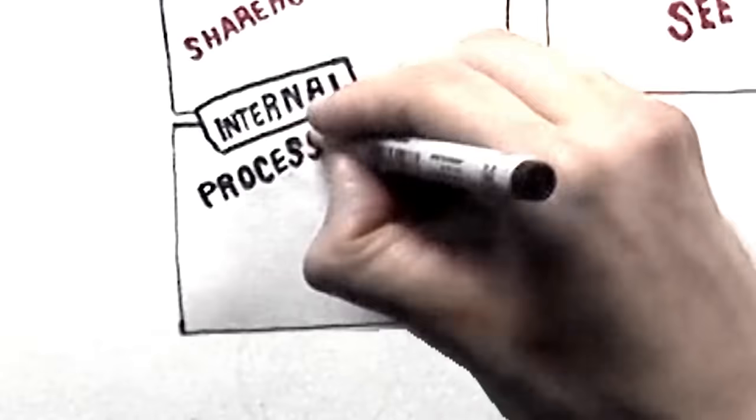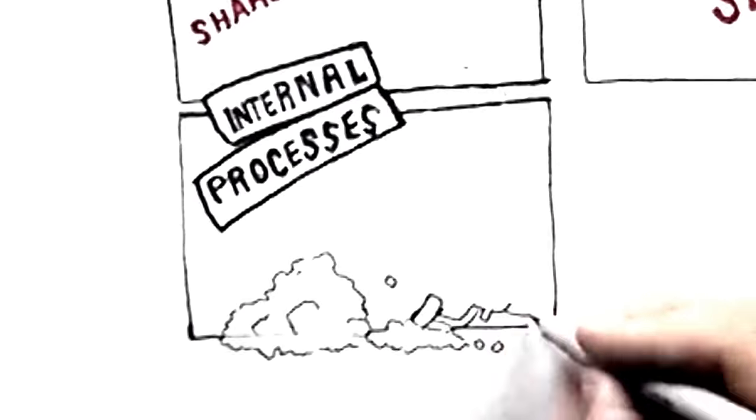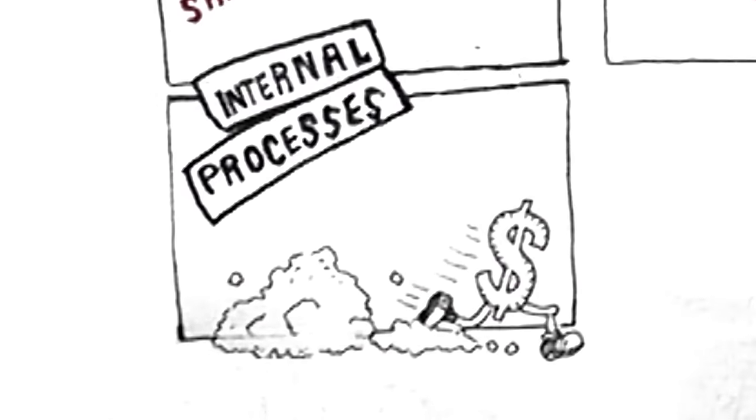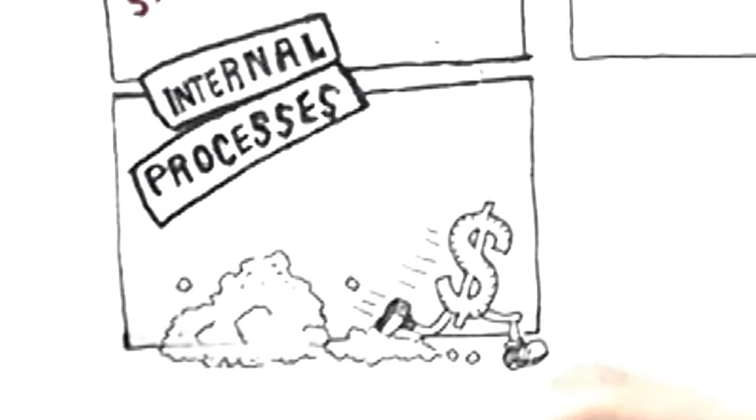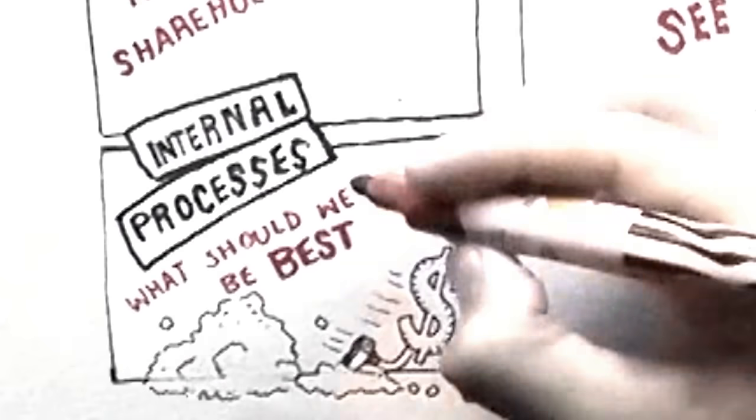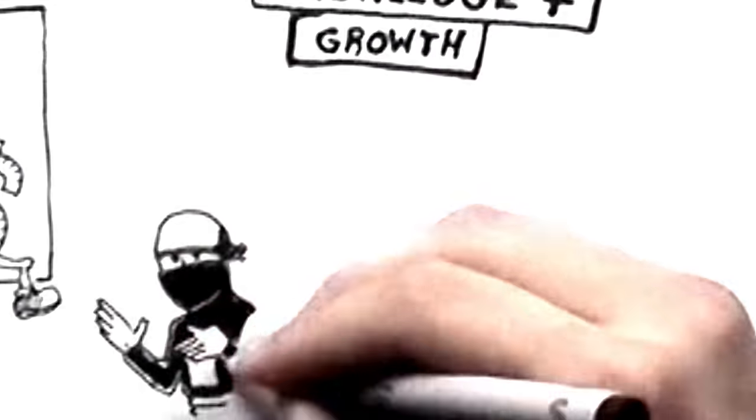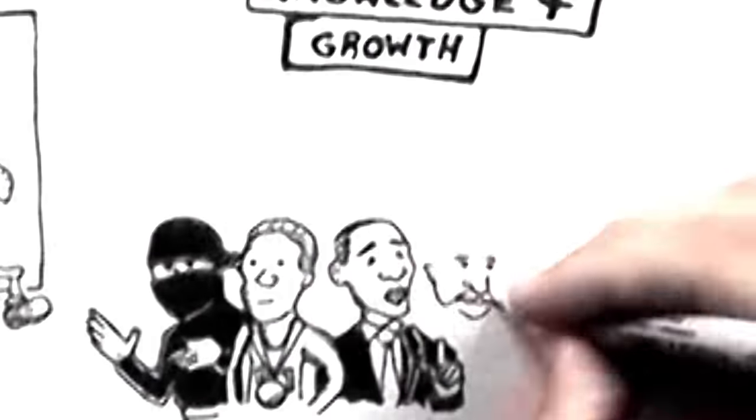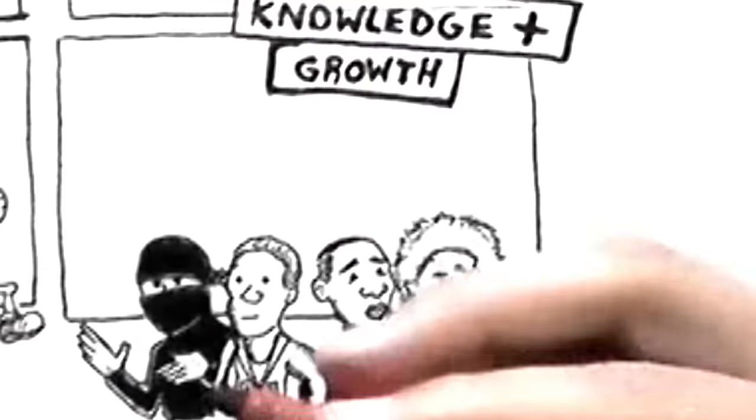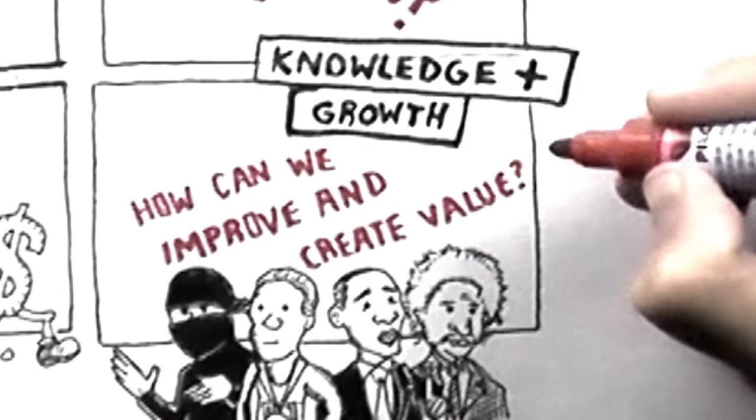The Internal Processes perspective determines how well the business is running and whether we provide what our customers actually want. In other words, what should we be best at? The Learning and Growth perspective looks at people, their skills, training, leadership and knowledge, answering the question, how can we improve and create value?